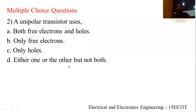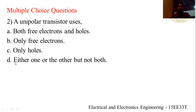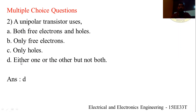Second question: a unipolar transistor uses — options are: (A) both free electrons and holes, (B) only free electrons, (C) only holes, (D) either one or the other but not both. The answer is D — either one or the other but not both. Unipolar transistor means the current conduction takes place only by majority charge carriers, which is either holes or electrons.